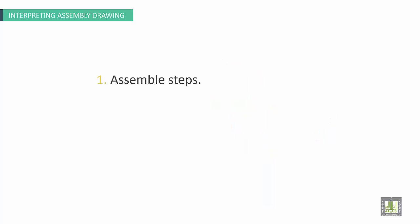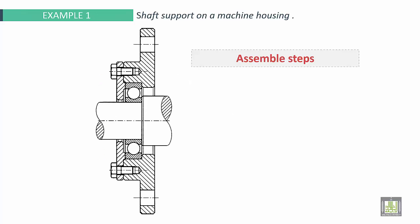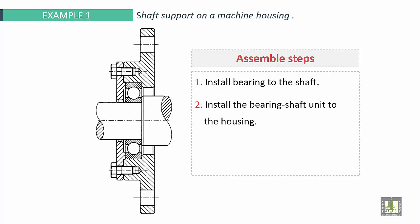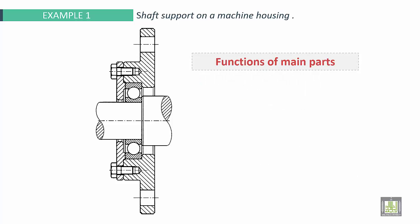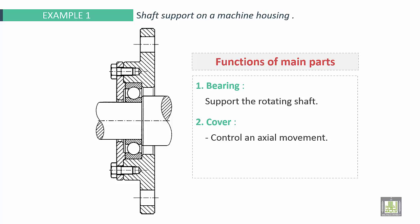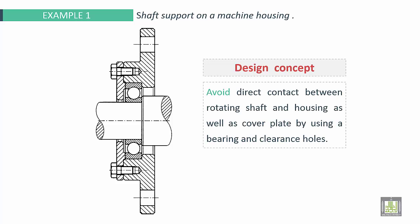Interpreting assembly drawing to make assembly steps. To analyze function of each part in machine and to make a design to understand the design concept. Here we have this assembly. Assemble steps are the following: install bearing to the shaft, install the bearing shaft unit to the housing, install the cover plate and tighten the screw. Function of main parts. Bearing: the function of the bearing is to support the rotating shaft. And the function of the cover is to control an axle movement and to prevent the bearing unit from rotation. As a design concept, to avoid direct contact between rotating shaft and housing as well as cover plate by using the bearing and clearance holes.